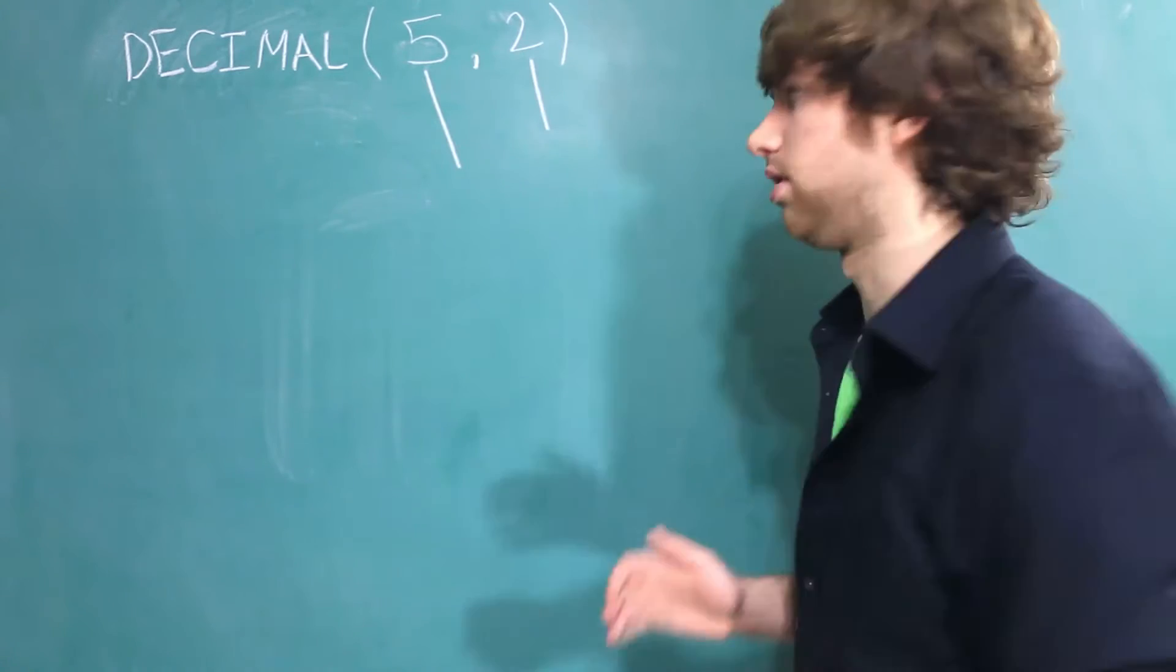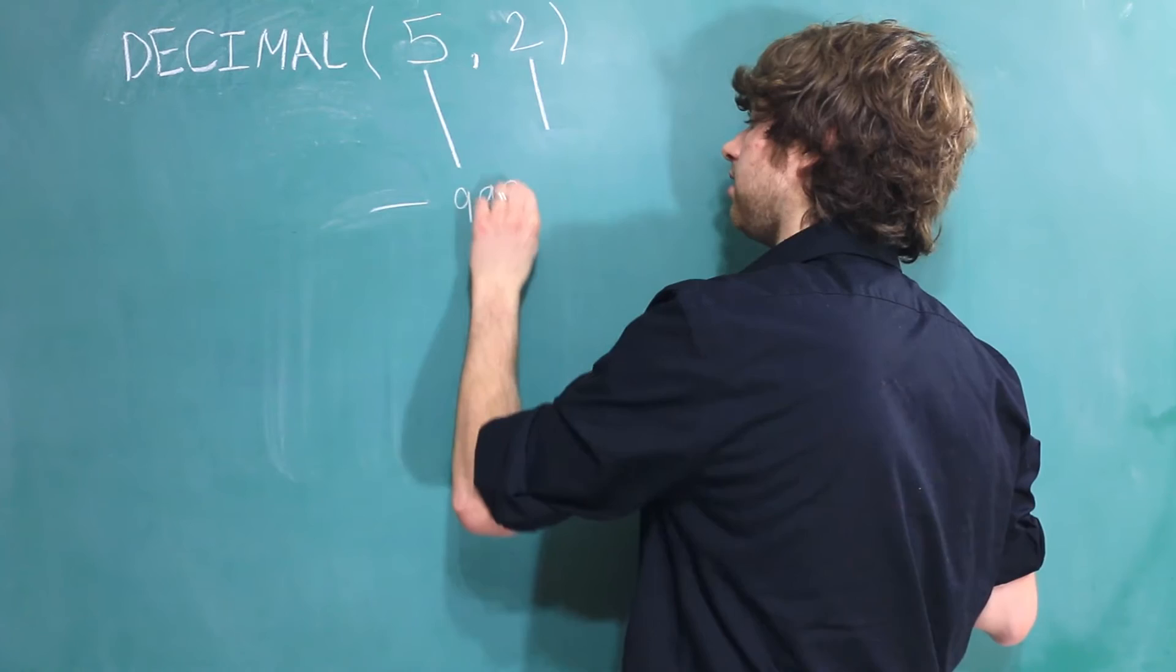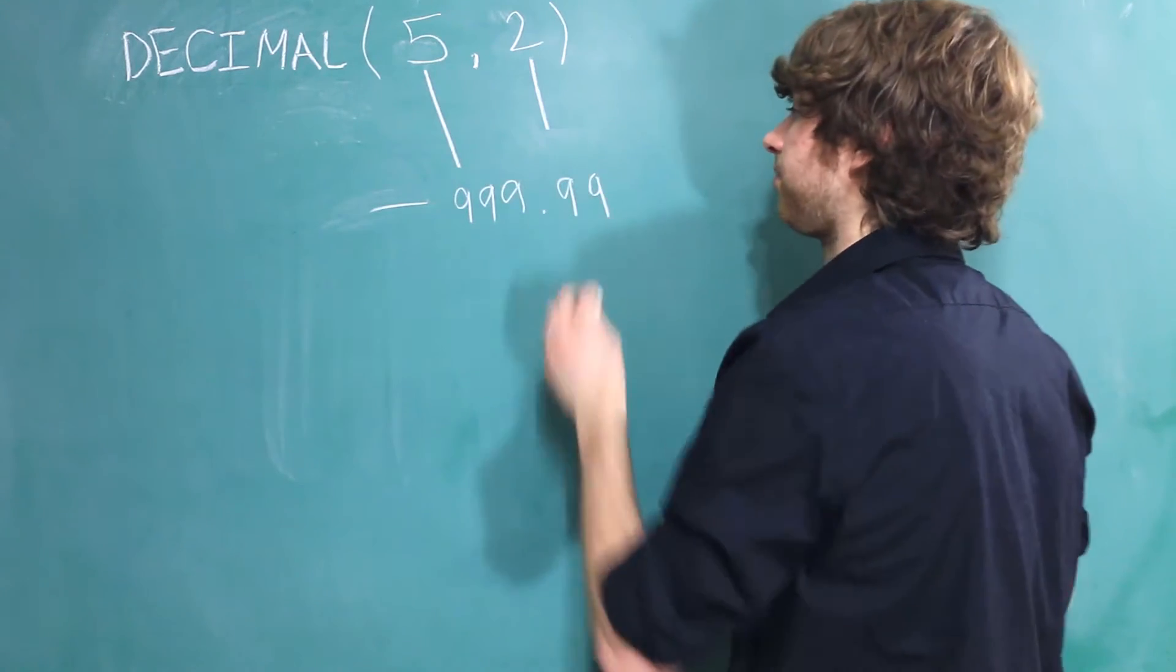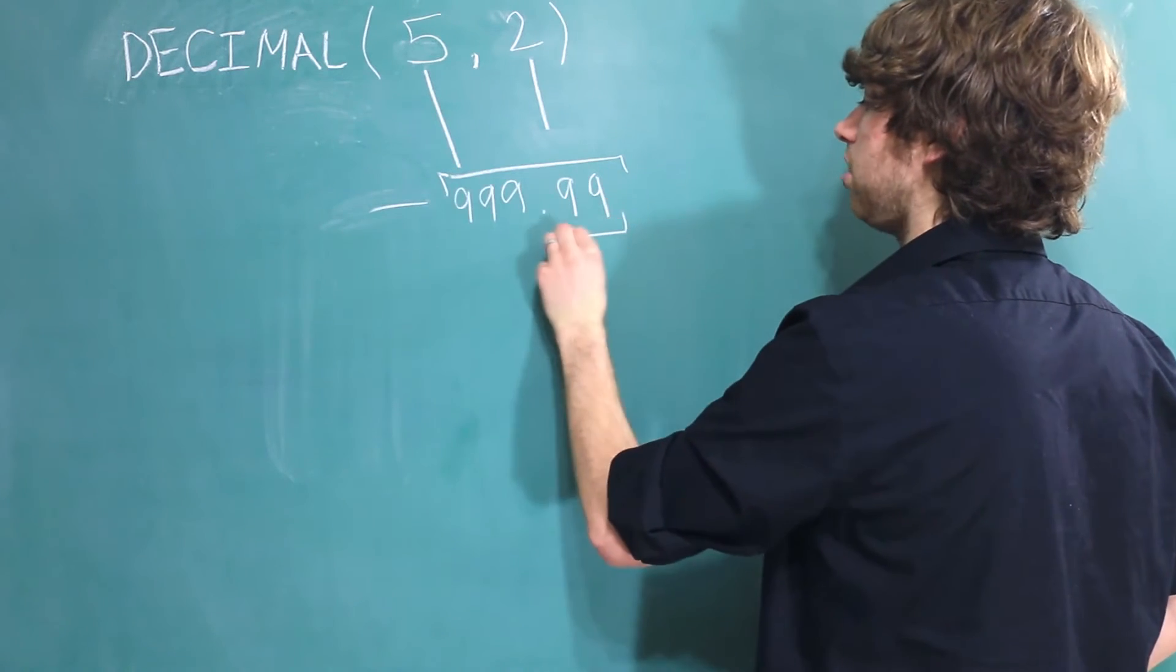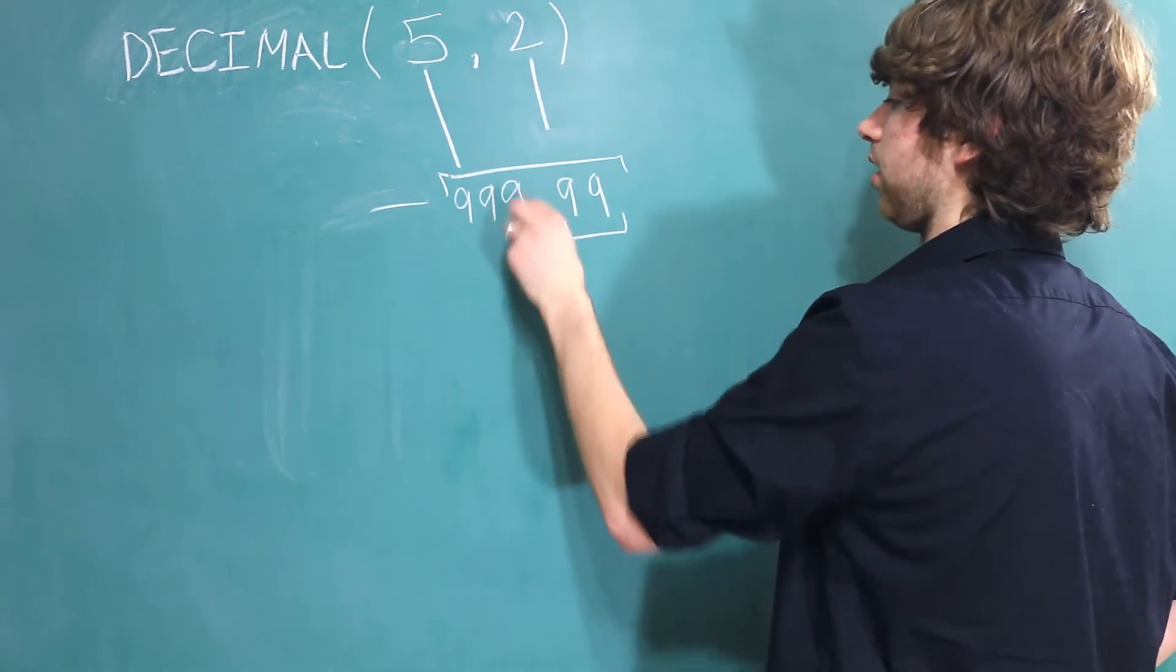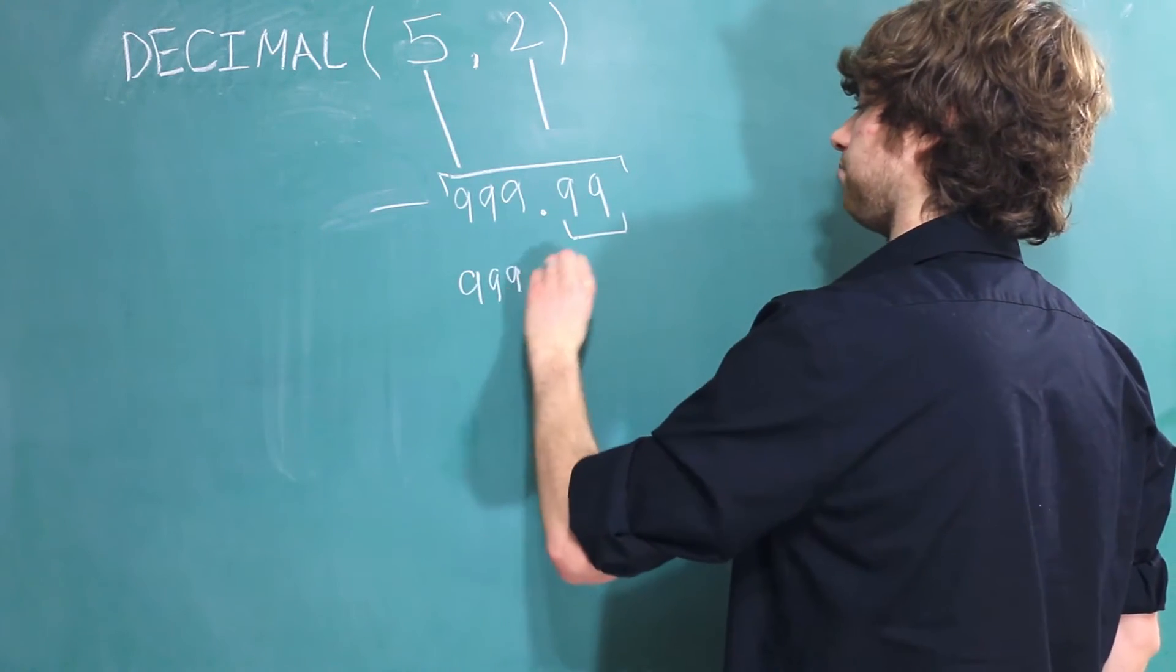the lowest number we could store would be negative 999.99. There's a total of 5 digits, 2 of which are after the decimal point. The highest number would be 999.99.